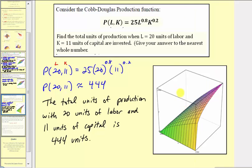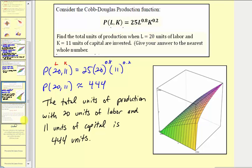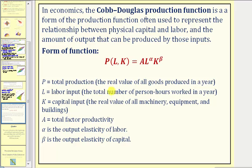The graph of the Cobb-Douglas production function is provided here — notice how it is a surface in space. If you want to learn more about the Cobb-Douglas production function, you may want to pause the video and review what all the variables represent. This production function is often used to represent the relationship between physical capital and labor, and the amounts of output that can be produced by those inputs.